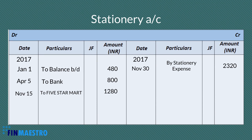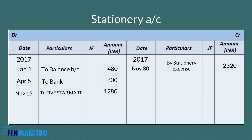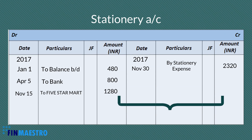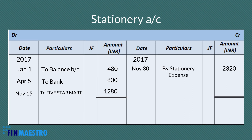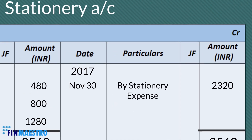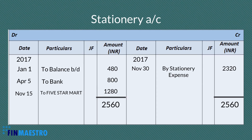Now, since all the transactions are over, let's see the status of this account at the period end. This exercise is called balancing. We will compare the debit and credit columns and see which side has the highest total, then write that highest total in both columns. In our case, the debit column is the highest and its total is Rs. 2,560. The actual total of the credit side is Rs. 2,320, so there is a difference of Rs. 240. Let's write that in the credit amount column so that the totals are mathematically correct.